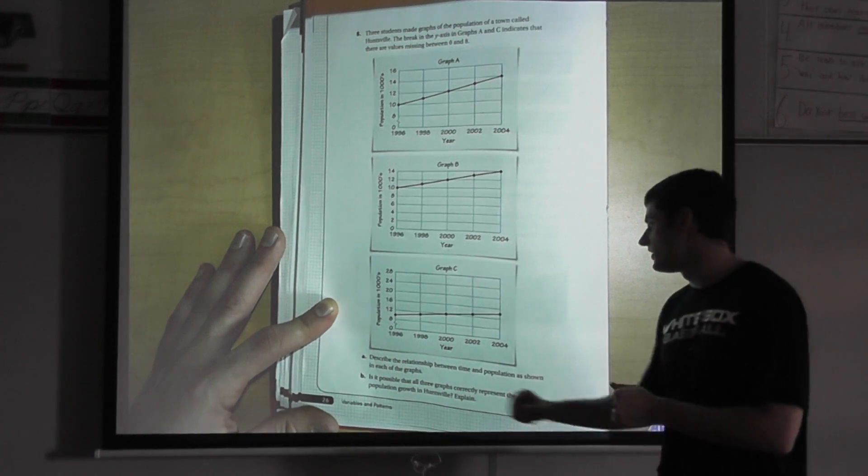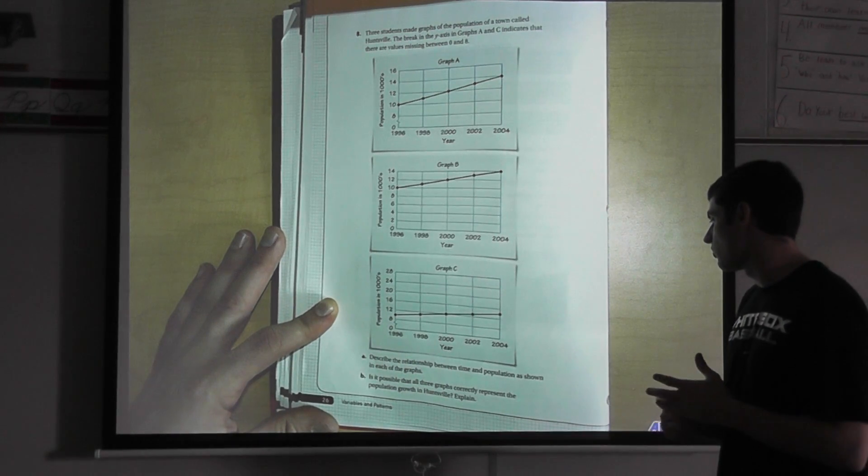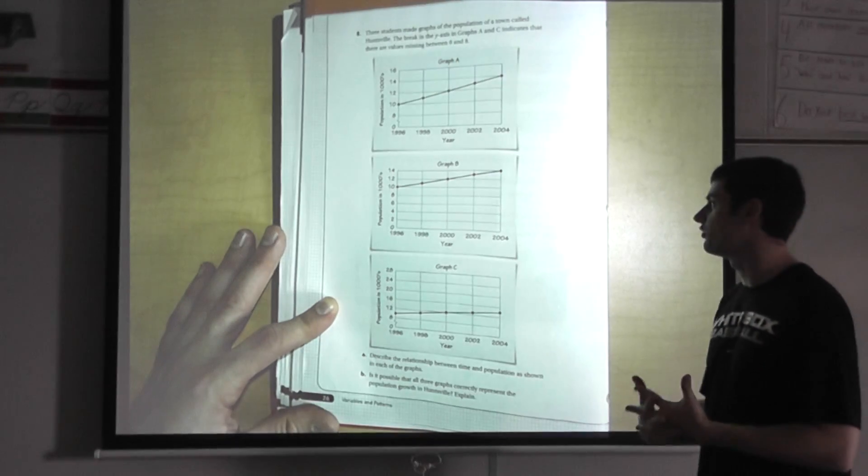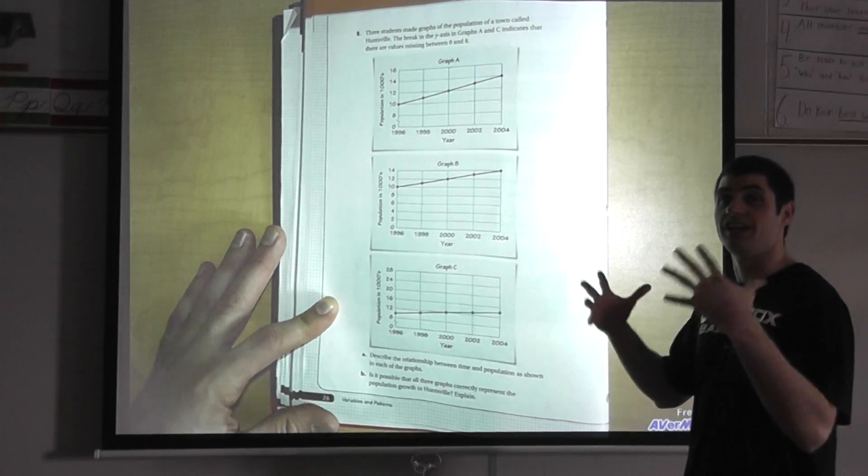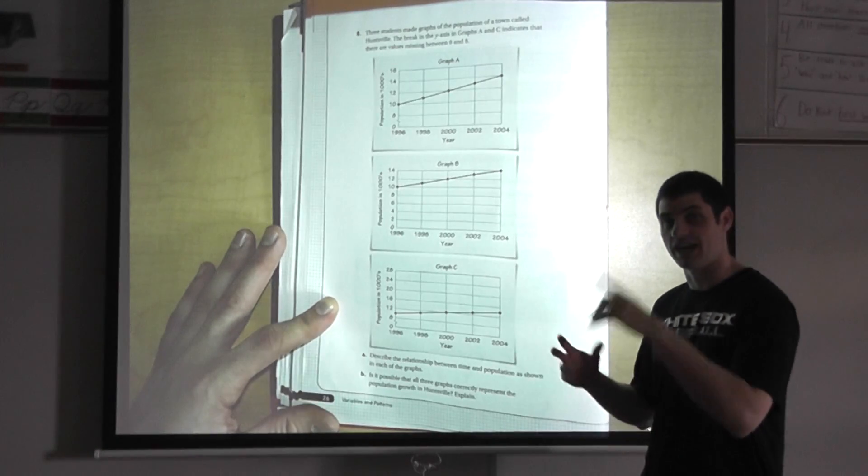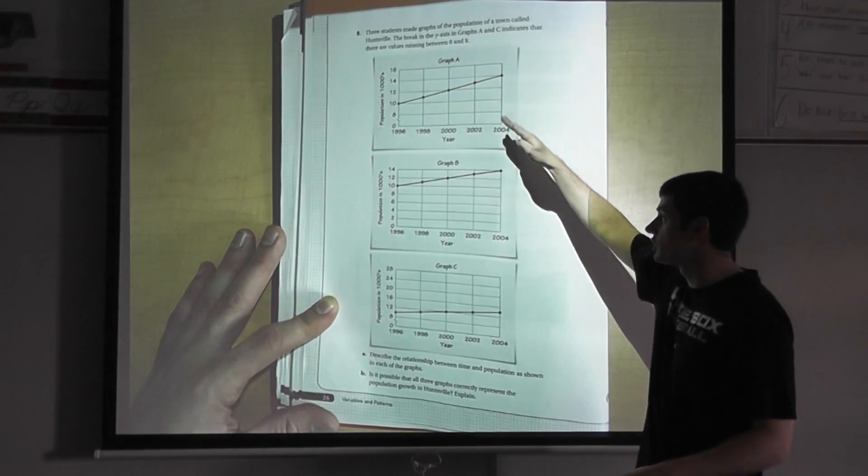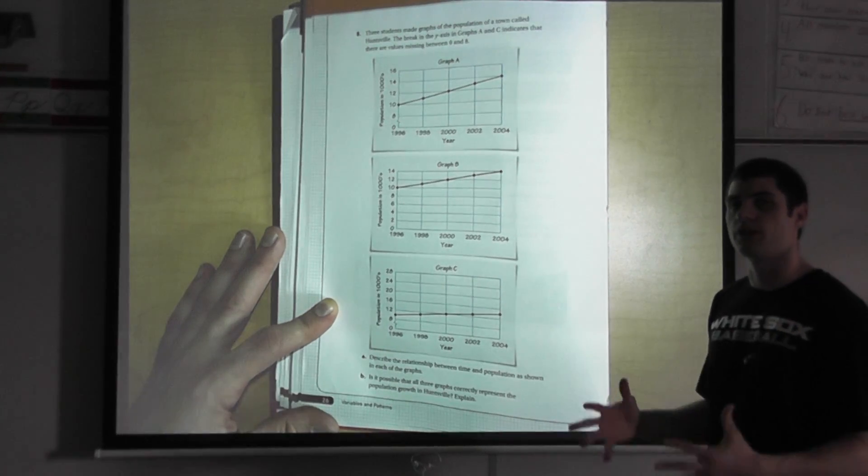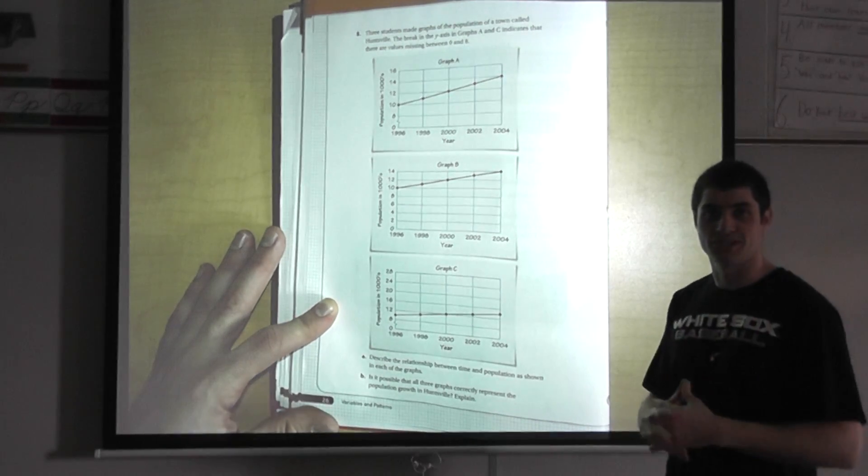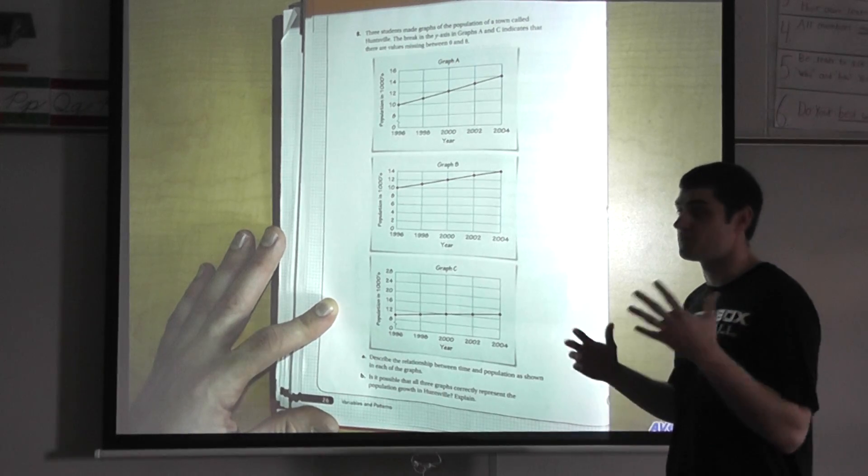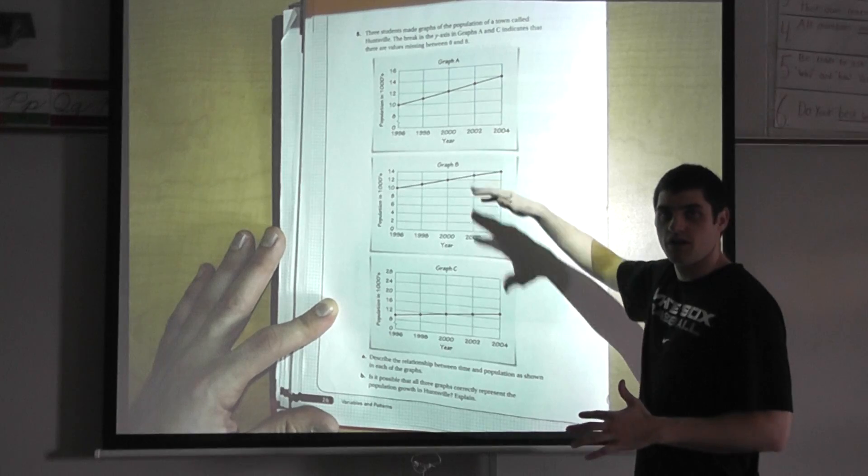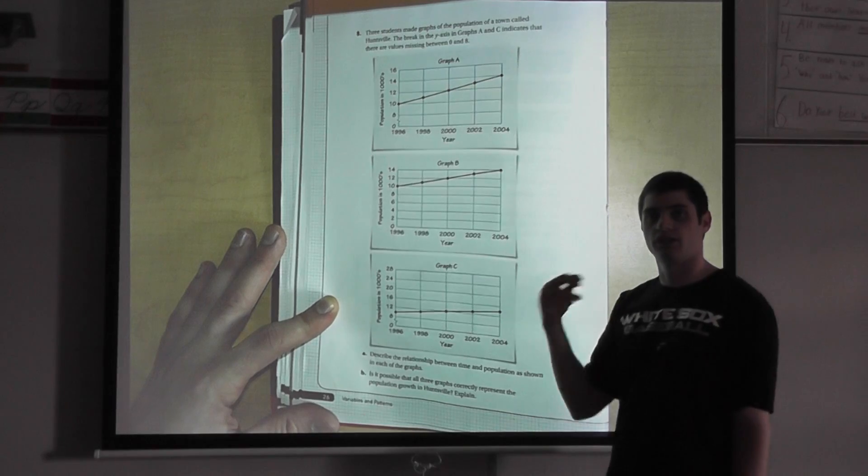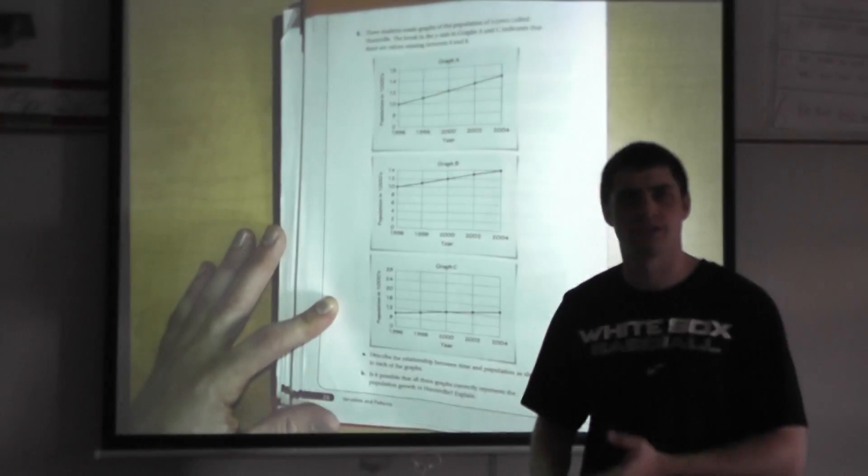Last part. Is it possible that all three graphs correctly represent the population growth in Huntsville? Explain. We just talked about it. All three of these graphs do not correctly show this. They do have the same information. That is true. Yes, all three graphs correctly show the total population. But if I'm looking at the growth, it is shown in three different ways. And again, like I said, that's as you'll start to see companies will start to show growth. Or like I said, probably sales for companies. You have to really start to become an analyzer of what the graphs are telling you. Look at the intervals and look at the total information.